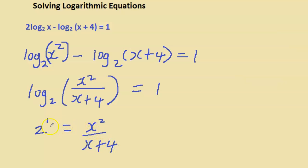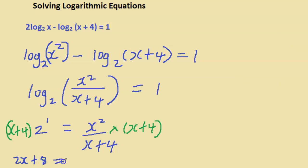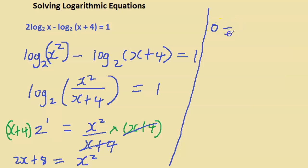We get rid of the denominator by multiplying both sides by (x plus 4). Expanding the left side: 2 times (x plus 4) gives 2x plus 8. On the right side, (x plus 4) cancels, leaving x squared. Grouping terms on the right hand side we have x squared minus 2x minus 8 equals 0.